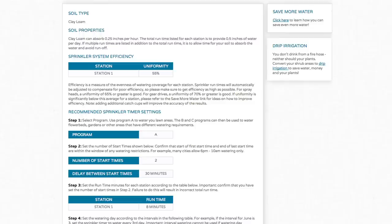Step two is the number of start times that the tool recommends. In this example, we have two recommended start times. This means that you will run all the stations two times. The delay in between start times is recommended to be at least 30 minutes. This is to allow time for the soil to absorb the water and not run off.